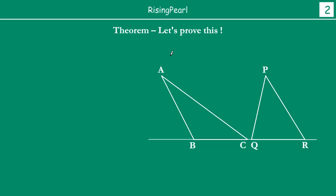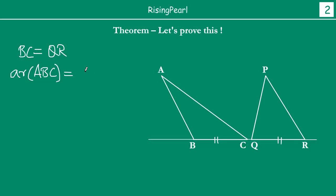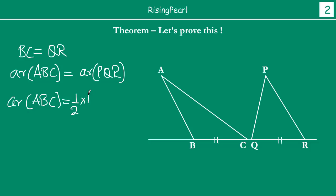So, let us talk about the approach — how we are going to go ahead and solve this. We have drawn two triangles ABC and PQR. What are the things given to us? We have seen that BC is equal to QR — the base BC is equal to QR. And we have seen that area of triangle ABC is equal to area of triangle PQR. Our strategy: we know that the area of any triangle is equal to half base times height. This formula we have learned before.